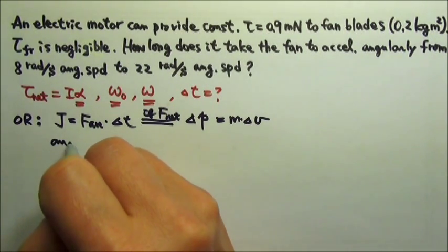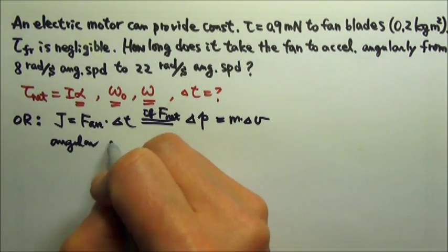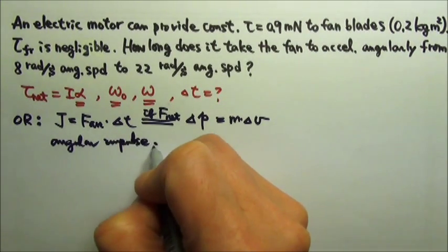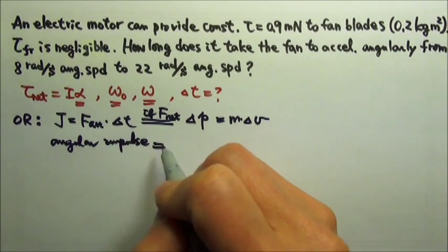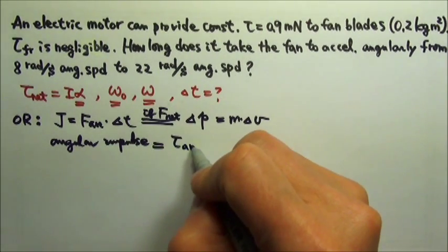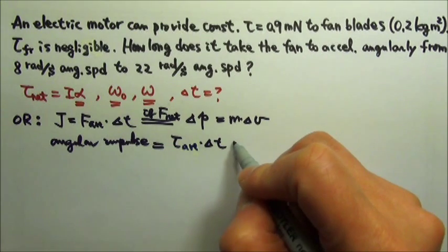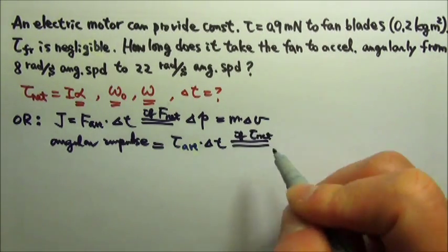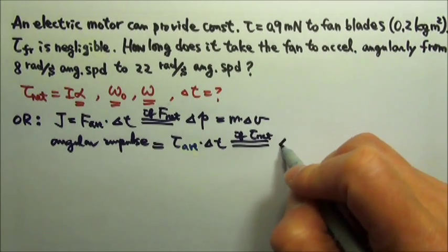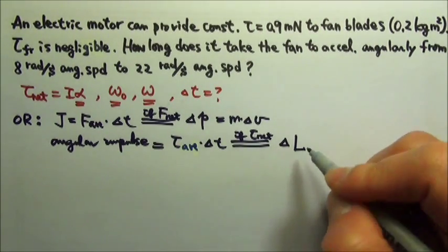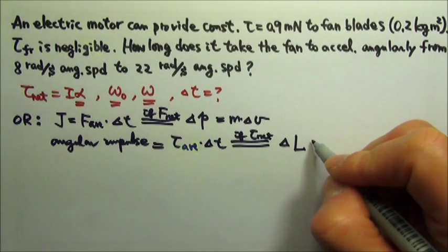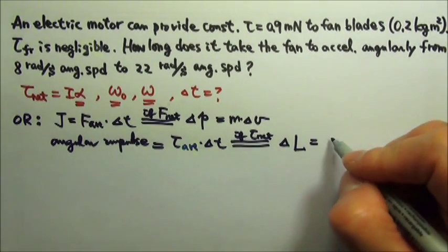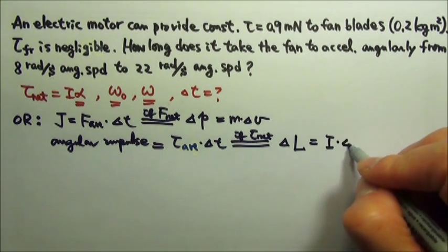This is for rotational motion, so we have to look at the angular impulse. The angular impulse equals to the average torque times time. And if this torque is the net torque, then it would equal to delta L, the changing angular momentum. And this would equal to, instead of m delta v, it's I times delta omega.